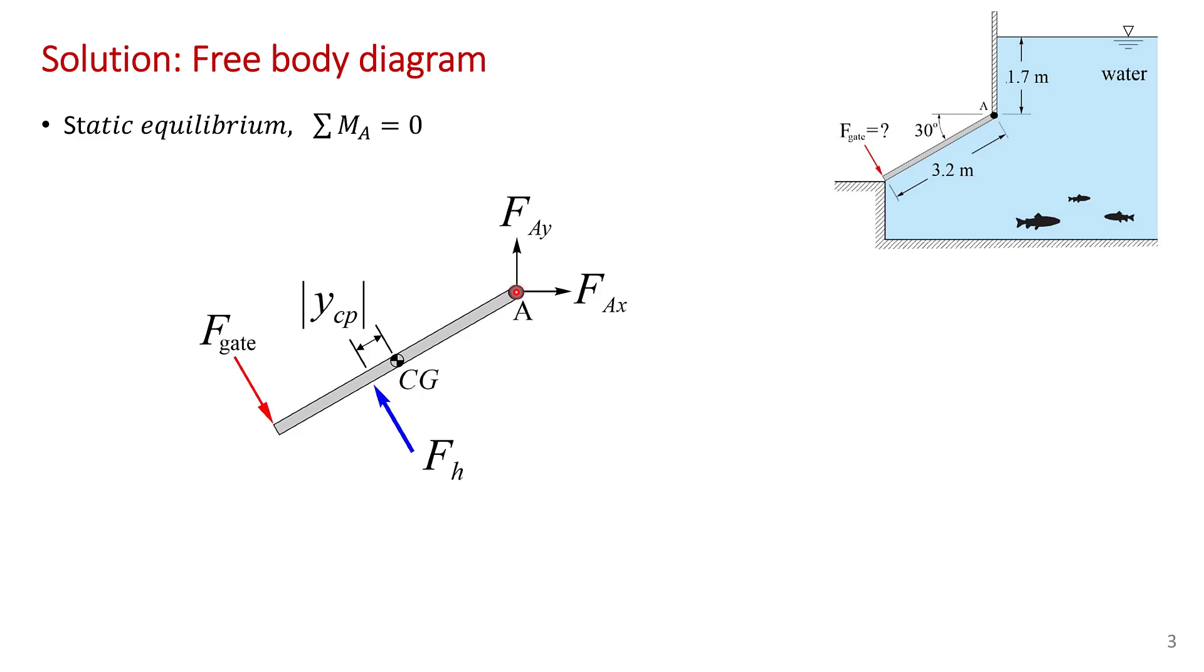So the forces on the gate are the hinge forces, the hydrostatic force of the water which acts at the center of pressure, and the gate force. Now actually there are other forces on the gate that I should mention. There is the atmospheric pressure. The atmospheric pressure acts equally and uniformly on both sides of the gate so it cancels out. So we don't need to consider it. So to solve this problem what we need to do is find the hydrostatic force and the location it acts which is the center of pressure.